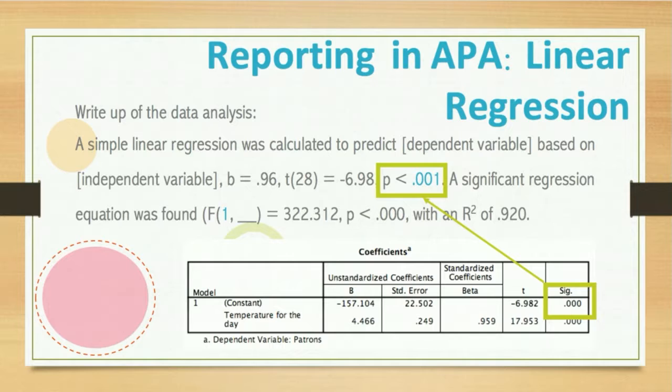Next, we report the p-value. SPSS gives you the exact p-value. APA tells you if it is less than 0.001 as a significance value, you need to say p is less than 0.001. This is an exception to the rule. For any other p-value, you have to give the exact value.